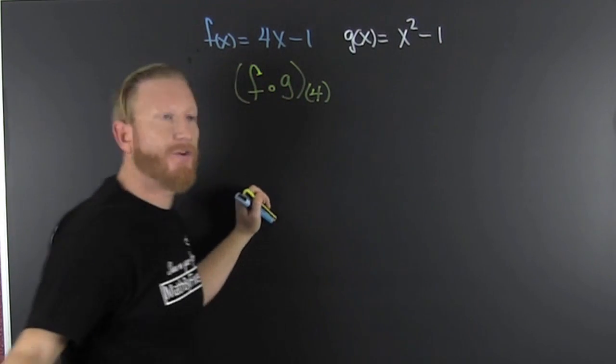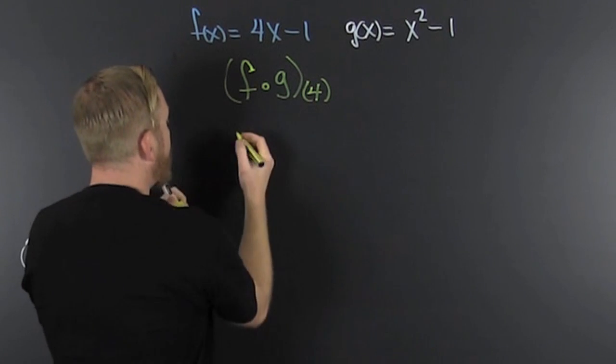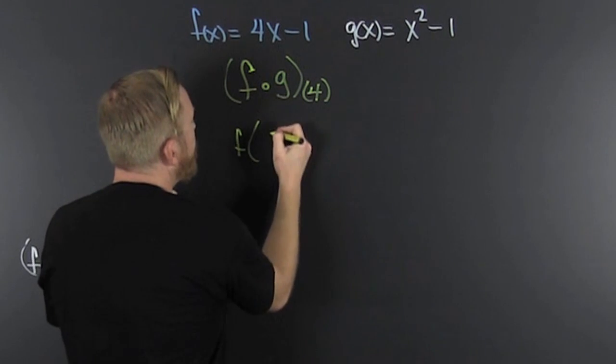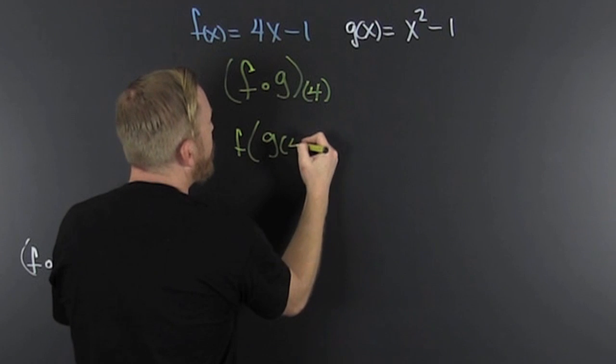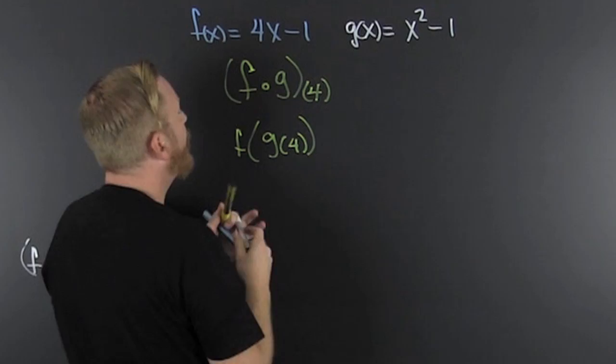Then, what am I looking for? I'm looking for f of g of 4. What is that? That is f of g of 4. So, what do I first need to find? I need to find my g of 4.